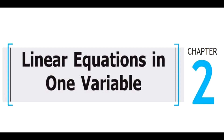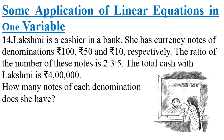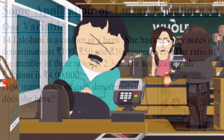Linear Equation in one variable, Chapter 2: Some Applications of Linear Equations in One Variable. Question number 14 in Exercise 2.2. Lakshmi is a cashier in a bank. She has currency notes of denominations 100 rupees, 50 rupees, and 10 rupees respectively. The ratio of the number of these notes is 2:3:5. The total cash with Lakshmi is 4 lakh. How many notes of each denomination does she have?